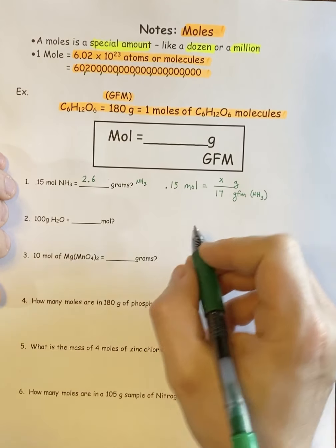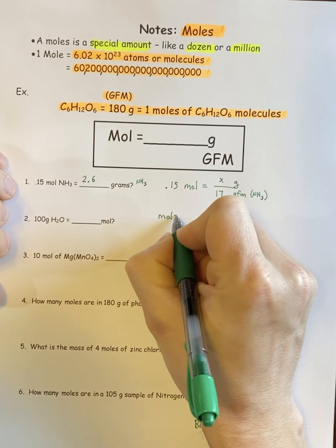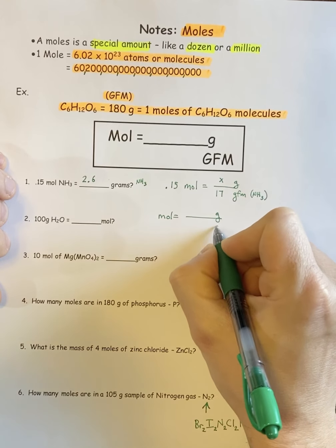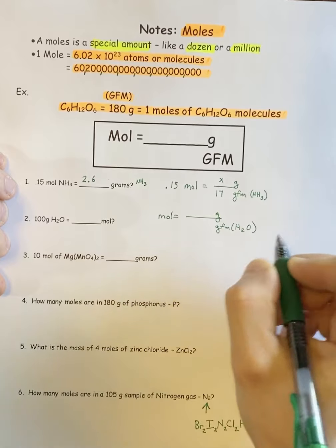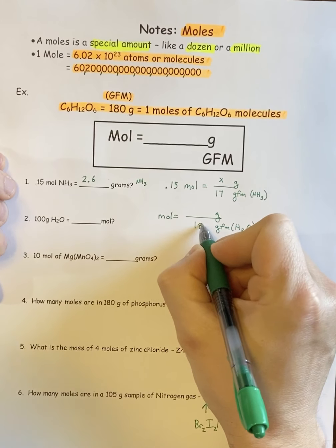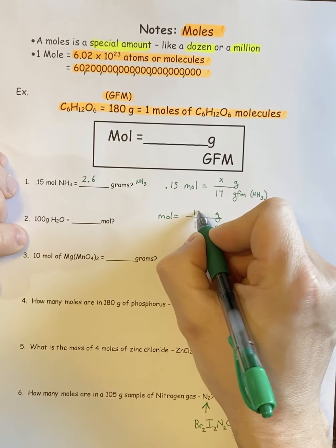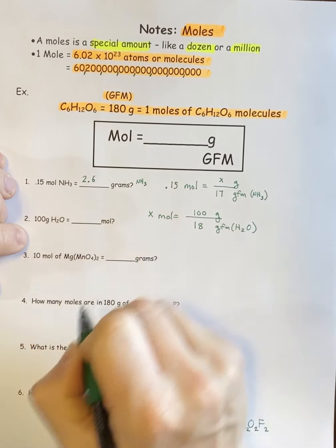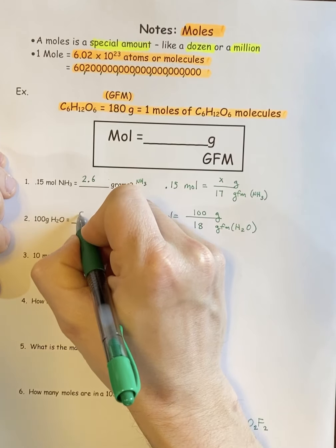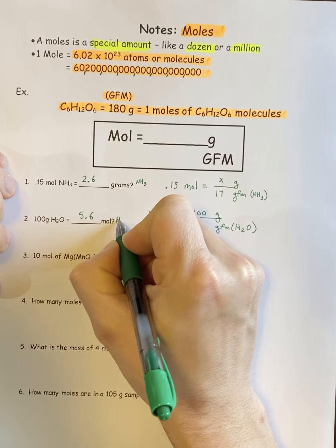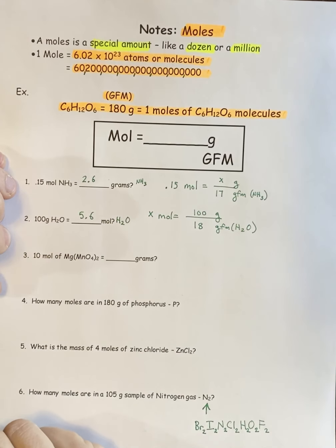100 grams of water. How many moles would that be? We know that the GFM of water is 18. We did that in our last video. They gave me 100 grams, they want to know how many moles. So just divide and you get 5.6 moles of water. It's that simple.